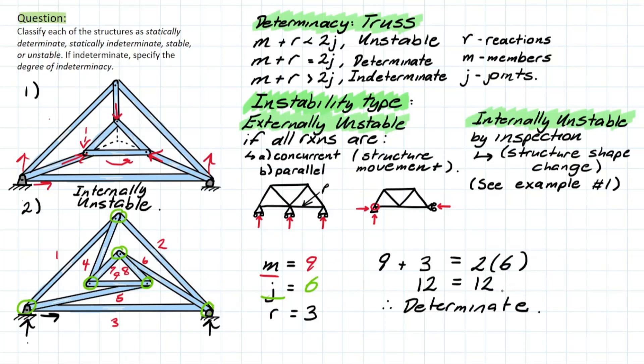If we do an external and internal check, we can see that the reactions are not acting at a concurrent point. They are not all parallel to each other. So externally, we are fine. And by visual inspection as well, we don't have a concurrent point where these members are acting. All these shapes are triangulated. Therefore, we can say it is also internally and externally stable.